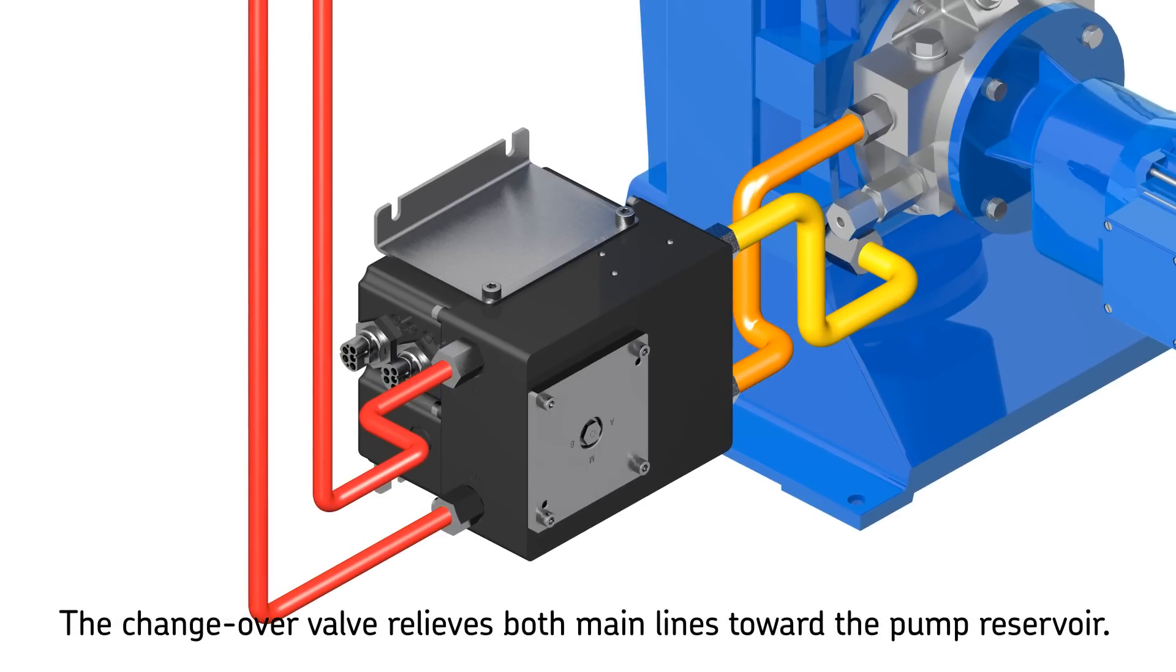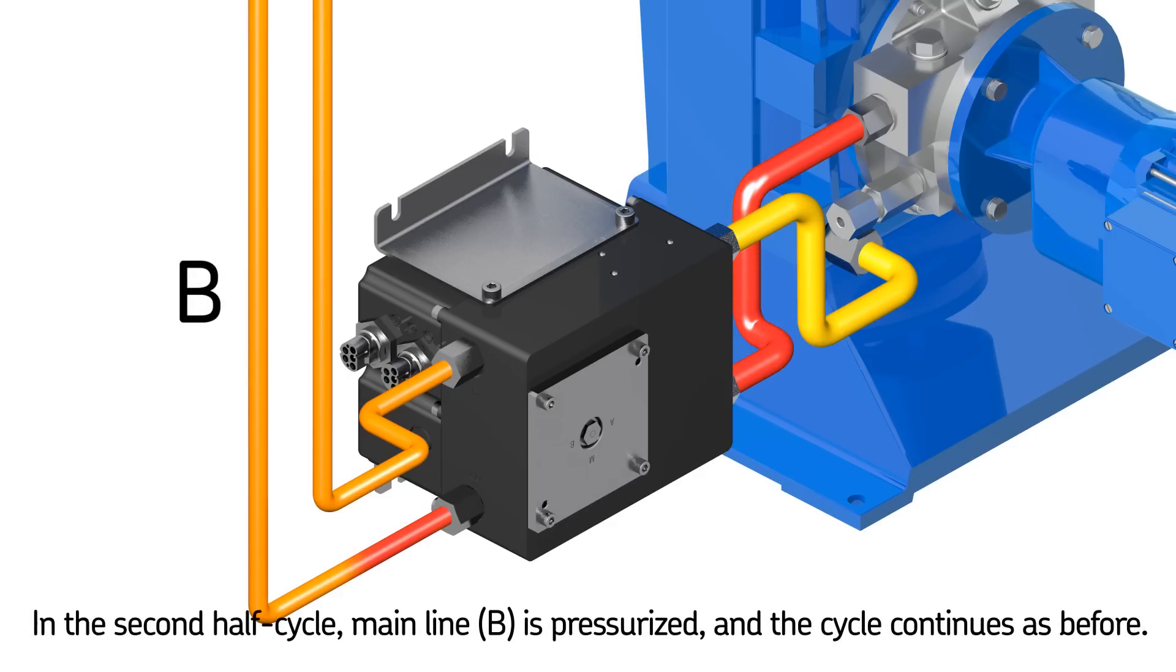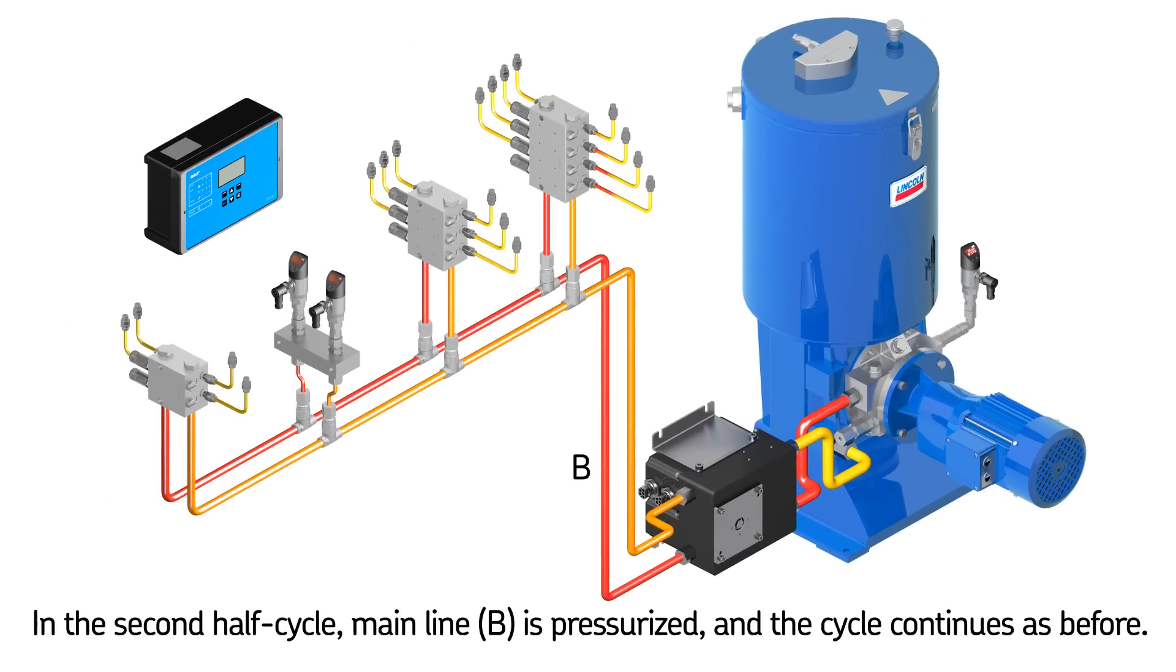System pressure relief works in such a way that the pressure line between the pump and changeover valve first gets relieved into one mainline, then both mainlines become relieved at the same time. In the second half cycle, mainline B is pressurized,